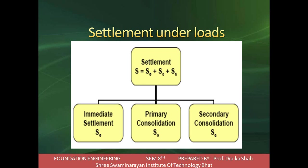For primary consolidation, after the initial consolidation, further reduction in volume of the soil mass occurs due to expulsion of water from voids - first air is removed, then water is removed. The removal of water from voids is called primary consolidation, also known as consolidation settlement. The short form for this is Sp.